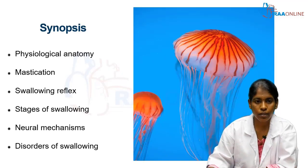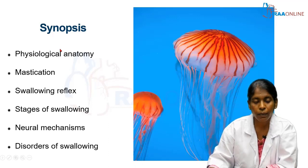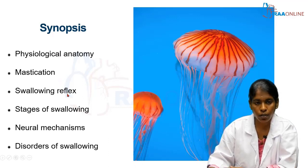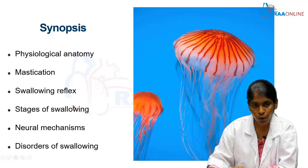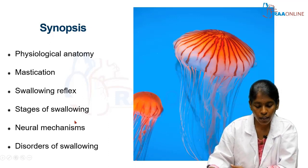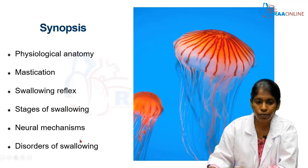This is the synopsis. First we are going to learn about the physiological anatomy of the oral cavity, pharynx, and the esophagus, and the sphincters involved. Then about mastication and then about the swallowing process — first the swallowing reflex, the stages of swallowing, and the neural mechanisms involved. Finally we are going to discuss certain disorders of swallowing.